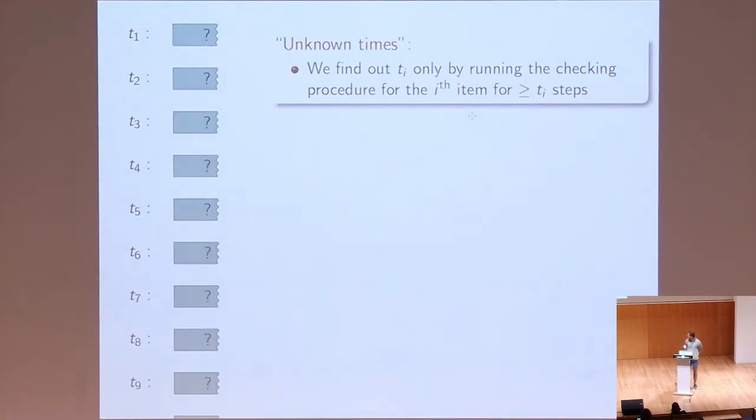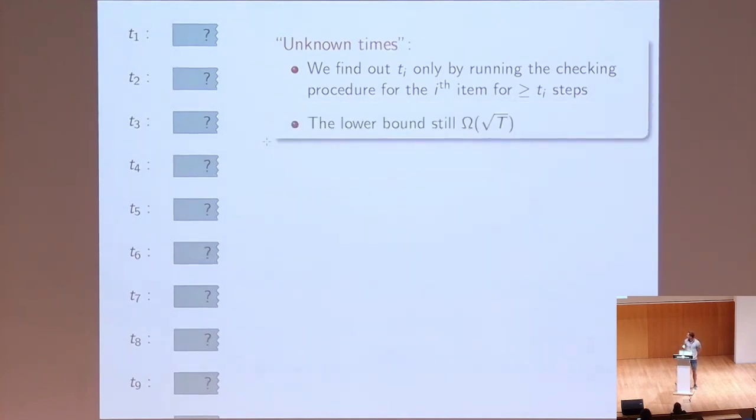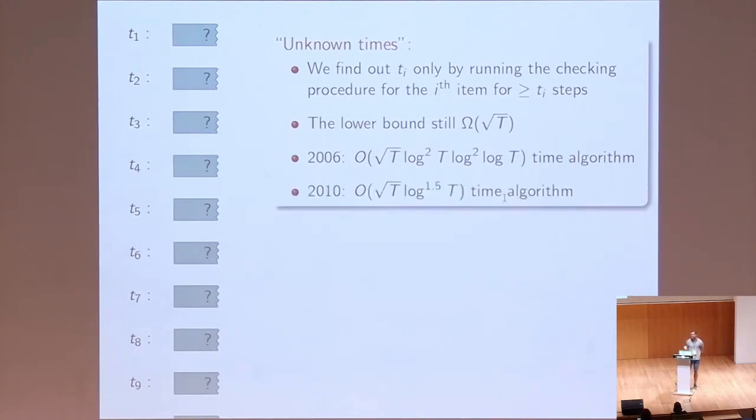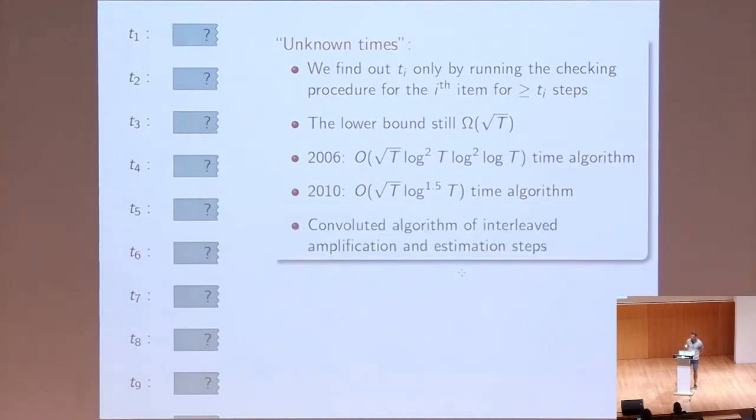But probably a more realistic case, having more applications, is when we do not know before how much time each item will require, and we only discover it by checking the respective item. And at least prior to this work, the best-known lower bound was still of the same order, the square root of T. But the algorithms actually have a polylog overhead. Back in 2006, there was given algorithm with such a complexity. A few years later, it was improved.